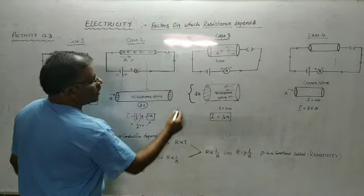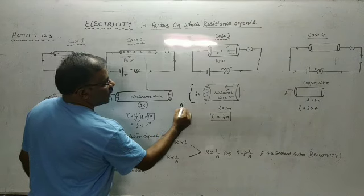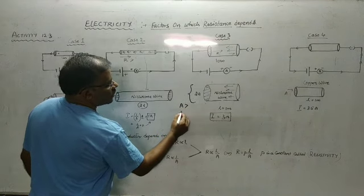If you take a wire of greater thickness, meaning if the area of cross-section is more, the resistance will be less.